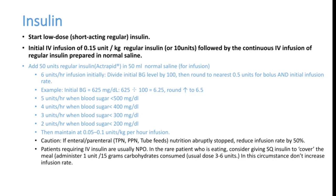After fluids and potassium correction, start insulin. Use a lower dose — no need for high doses in DKA, as the primary aim is to correct acidosis with fluids first. Initial insulin infusion is 0.15 units/kg of regular insulin by continuous IV infusion, not bolus. Preparation: add 50 units of regular insulin in 50 mL of normal saline. Start at 10 units or 0.15 units/kg, then titrate based on blood sugar.